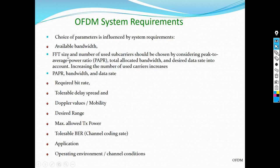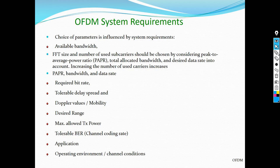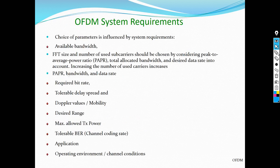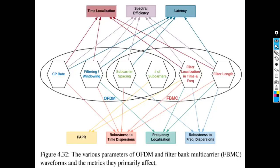For example, the FFT size and the number of used sub-carriers should be chosen by considering the peak-to-average power ratio, total allocated bandwidth, and desired data rate, because increasing the number of sub-carriers increases the peak-to-average power ratio, bandwidth consumed, and data rate. The goal is to match the OFDM parameters to the requirements of the application or use case.